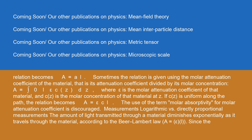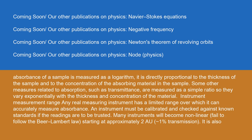The amount of light transmitted through a material diminishes exponentially as it travels through the material. According to the Beer-Lambert Law, A = ε × C × L. Since the absorbance of a sample is measured as a logarithm, it is directly proportional to the thickness of the sample and to the concentration of the absorbing material. Some other measures related to absorption, such as transmittance, are measured as a simple ratio, so they vary exponentially with the thickness and concentration of the material.